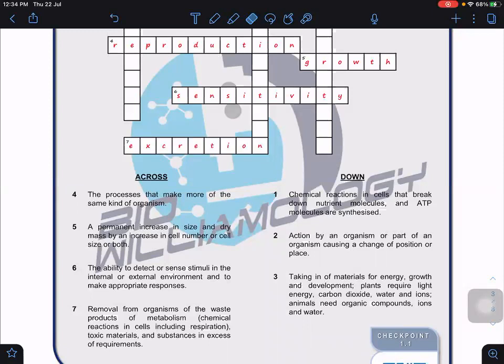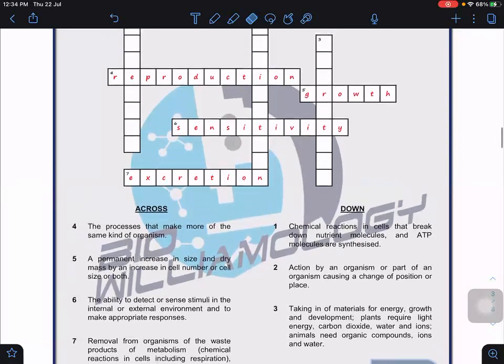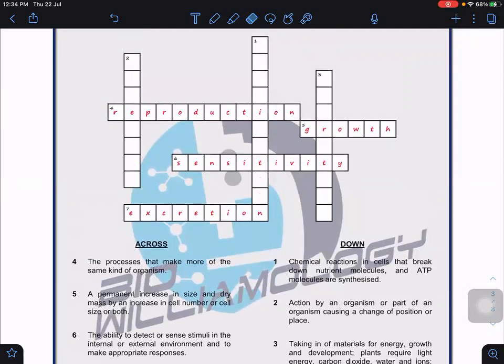Chemical reactions in cells that break down nutrient molecules and ATP molecules are synthesized. Be careful - we learned in physics we cannot produce energy and we cannot destroy energy. This process takes place in mitochondria. What we synthesize is the ATP molecule. We'll look at this in the next subtopic, 1.2, when we study mitochondria. Number one: respiration.